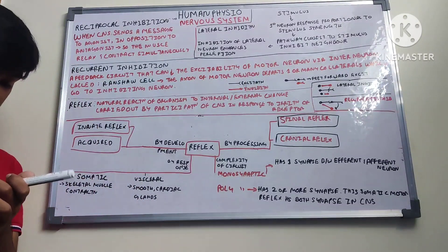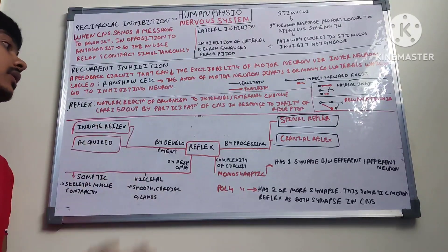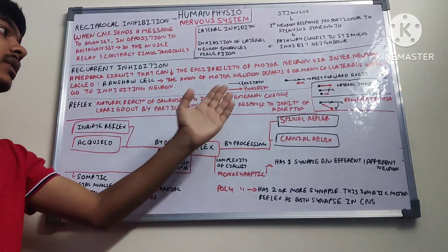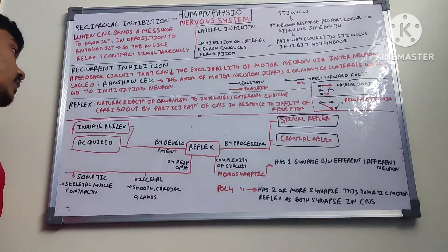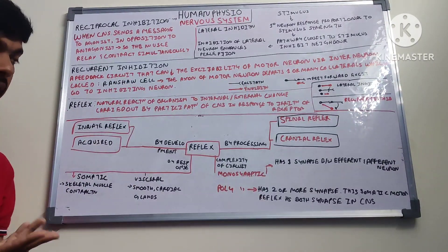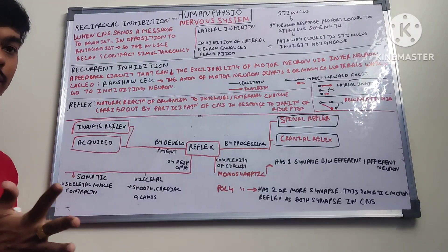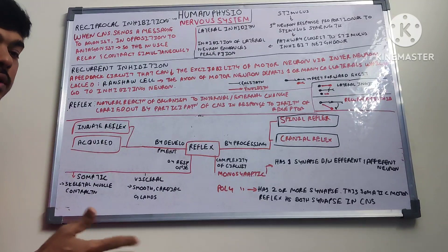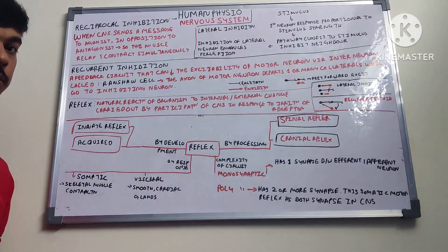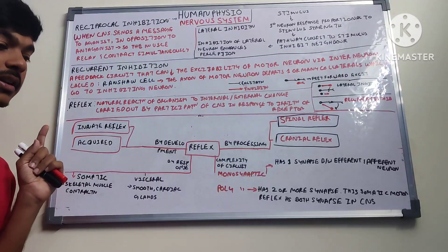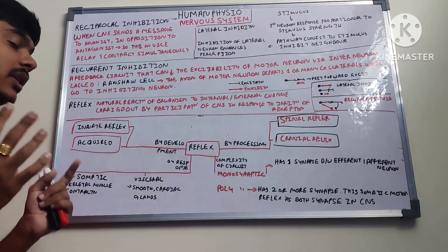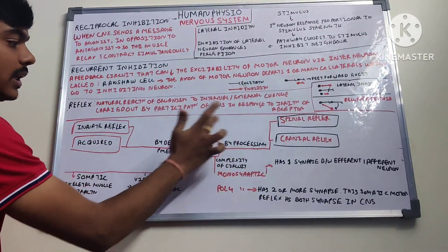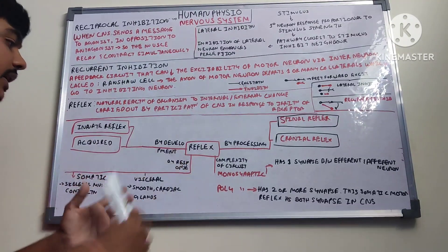Next is reflex — the natural reaction of an organism to internal or external change, carried out with the participation of the central nervous system in response to the irritation of a receptor. For example, when you touch a hot object you immediately pull back — an involuntary reaction. You feel the pain afterwards. The spinal cord is involved in this reflex arc.